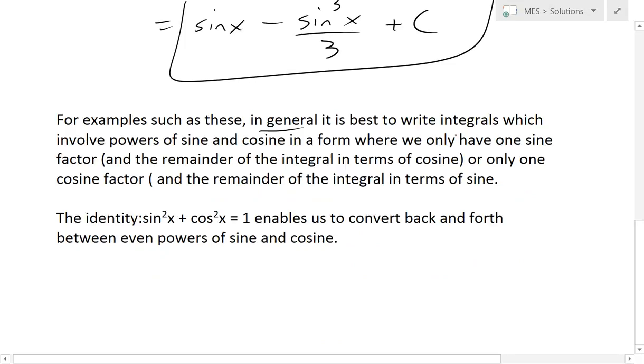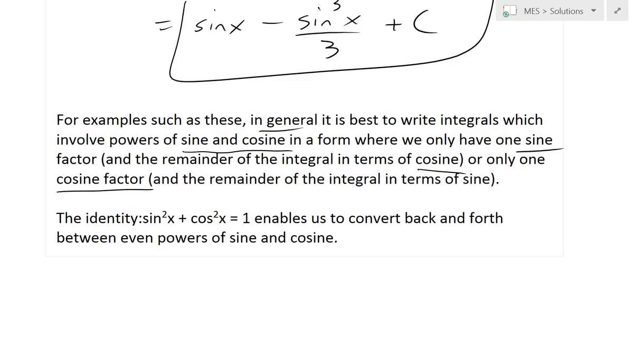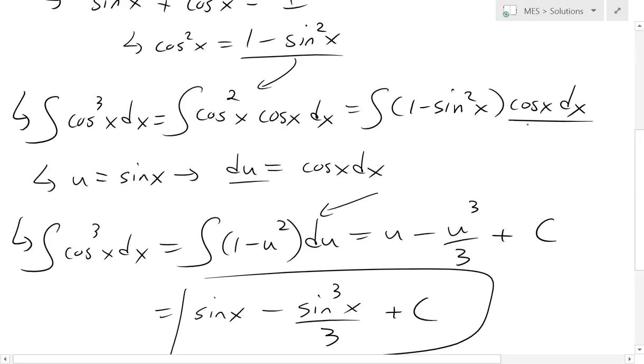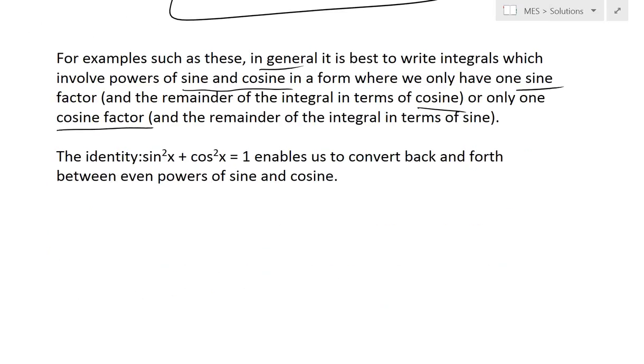In general, it is best to write integrals which involve powers of sine and cosine in a form where we only have one sine factor and the remainder of the integrals are cosine, or one cosine factor and the remainder of the integrals in terms of sine, which is exactly our case. We had one cosine factor and the remaining ones here are all in terms of sine there. And also the identity sine squared x plus cos squared x equals one enables us to convert back and forth between even powers of sine and cosine.